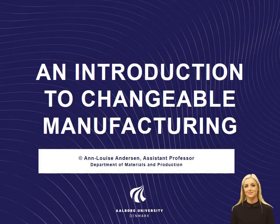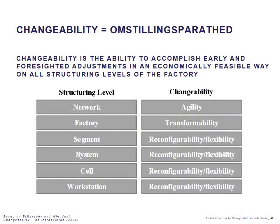In this slidecast I will give you an introduction to changeable manufacturing and changeability. Changeability is what we in Danish call omstillingsparathed. We define changeability as the ability to accomplish early and foresighted adjustments or changes in an economically feasible way on all structuring levels of the factory. In this course we focus on the manufacturing system and levels below that, where reconfigurability and flexibility are particularly important.